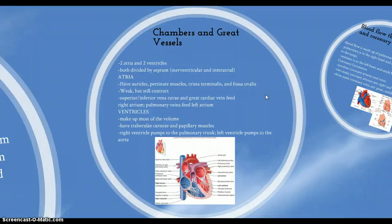Let's talk about the chambers and great vessels in your heart. There are four chambers: two atria and two ventricles, divided by the septum. The interventricular septum divides the right and left ventricles, and the interatrial septum divides the right and left atria.